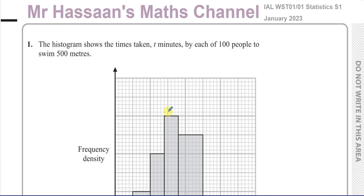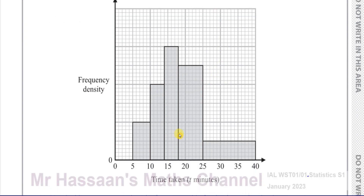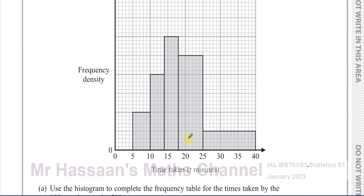So let's start with question number one. This is about histograms, frequency tables, standard deviation, linear interpolation — lots of different things in here. So here we're given this histogram, which shows the times taken by each of 100 people to swim 500 metres. This histogram represents those 100 people and tells you about the times taken for them to swim 500 metres.